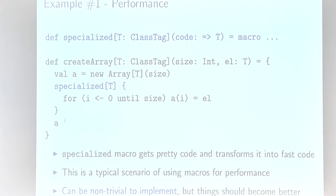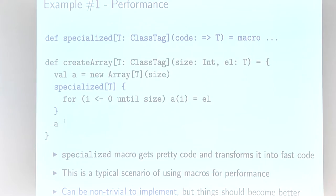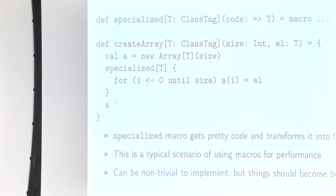There are quite a few situations where this technique works — for instance, transforming for-loops into while-loops with optimal performance and no closures. These kinds of macros can sometimes be tricky to write due to rough edges in the 2.10 API, but this is expected to improve. If you have problems with macros you can always reach out by email or on the scala-internals or scala-user mailing lists.